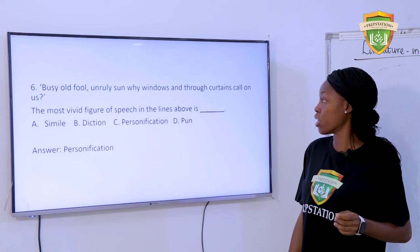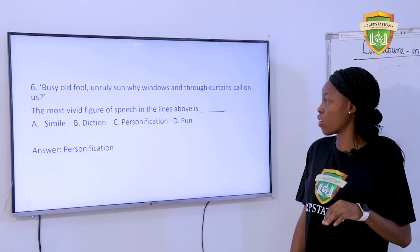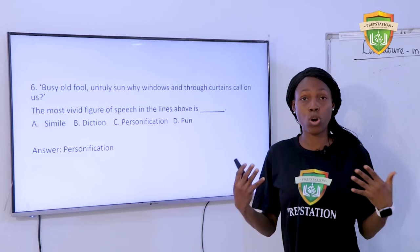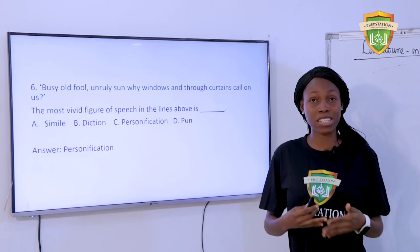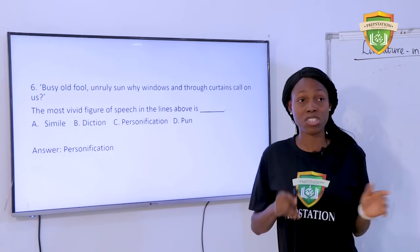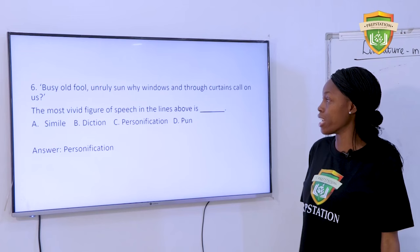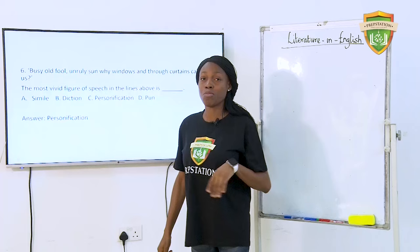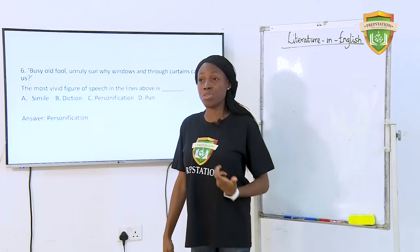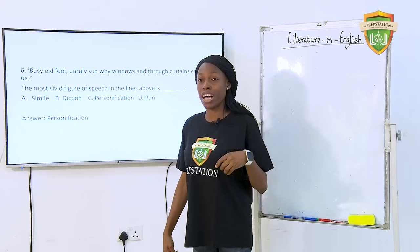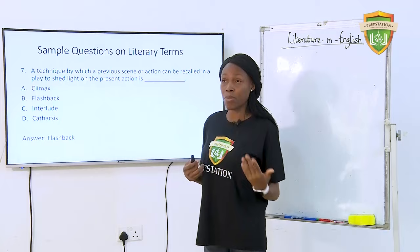Question 6: 'Busy old fool, unruly sun, wide windows and true curtains call on us.' The most vivid figure of speech in these lines — sometimes you might have one, two, or more figures of speech in a particular excerpt, so you are expected to look for the one which is vivid or obvious. In this case, the answer is personification, because the sun is described as a 'busy old fool' — attributes assigned to something that is not human.